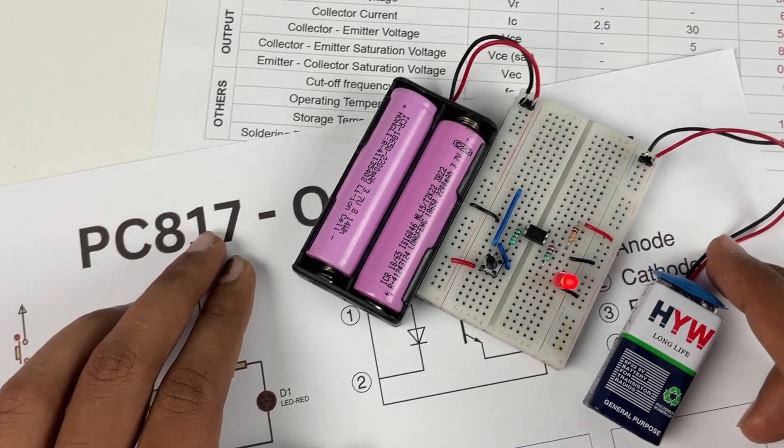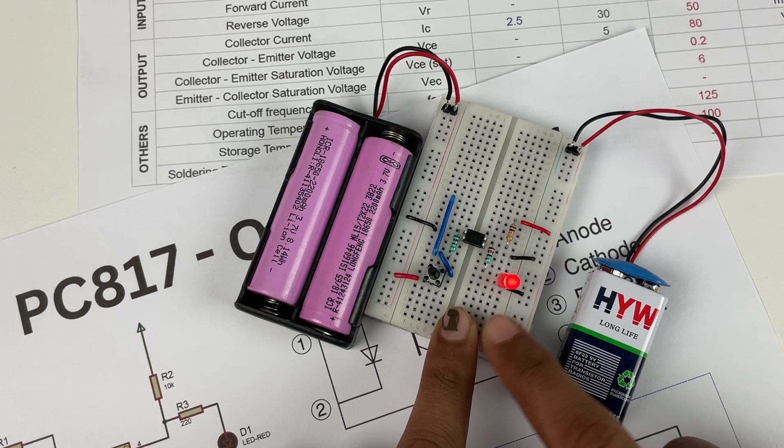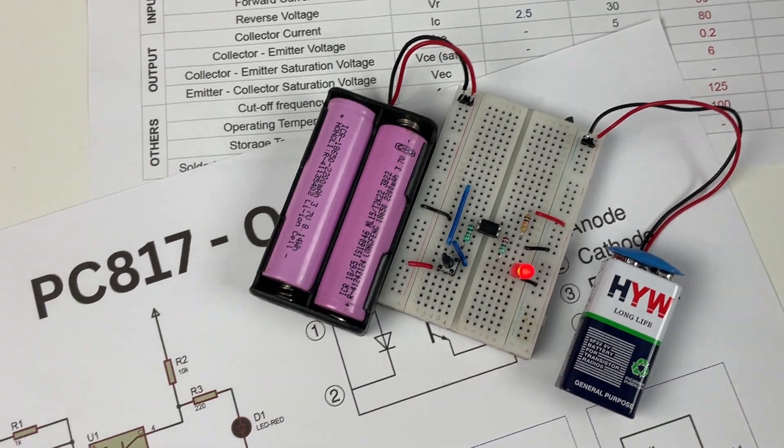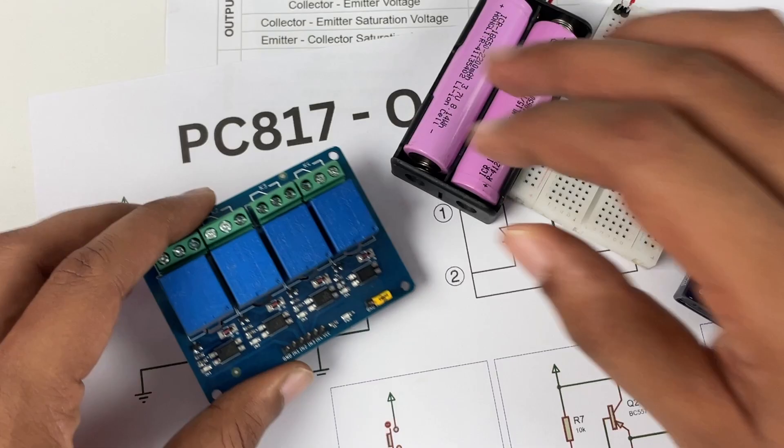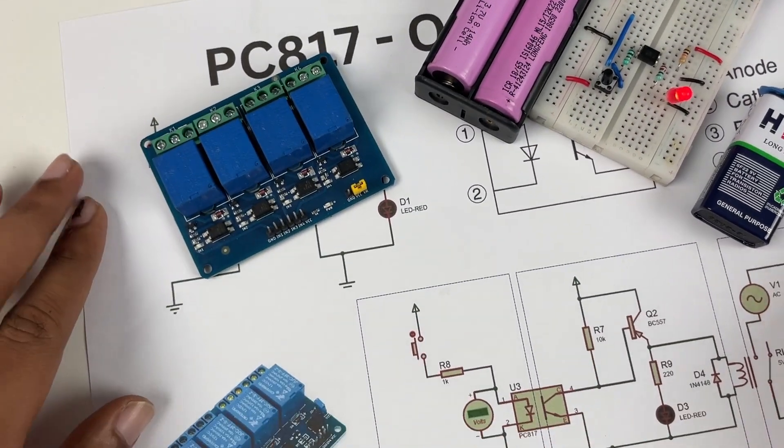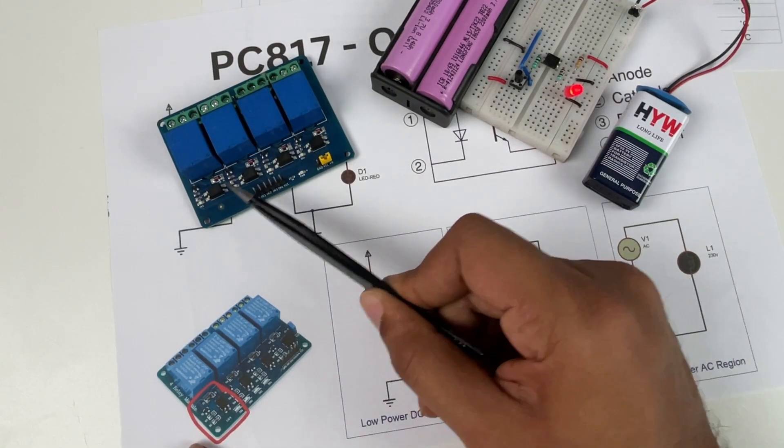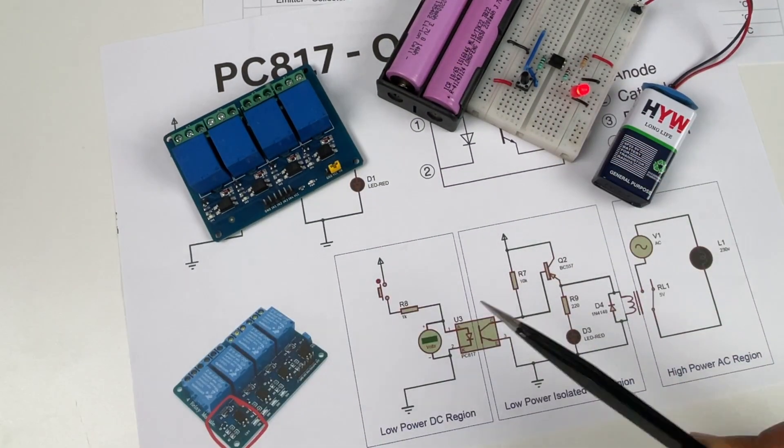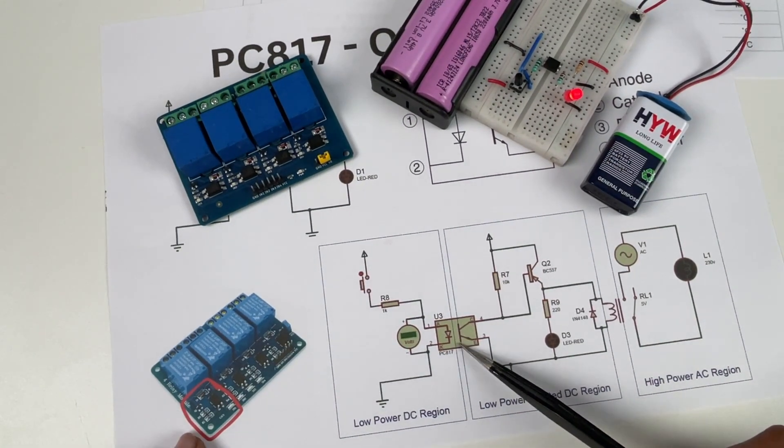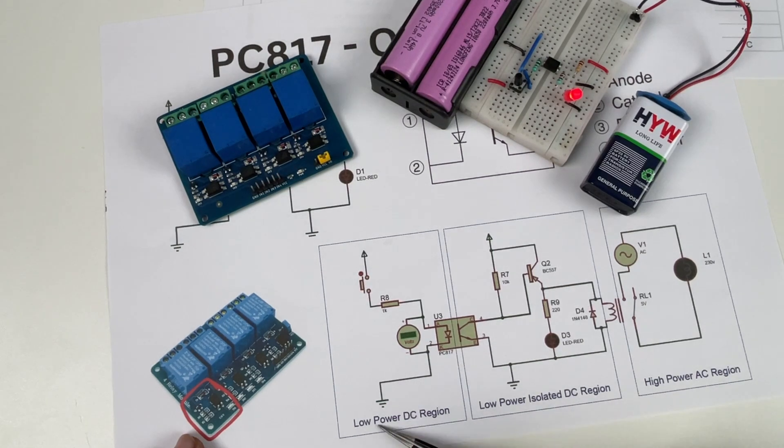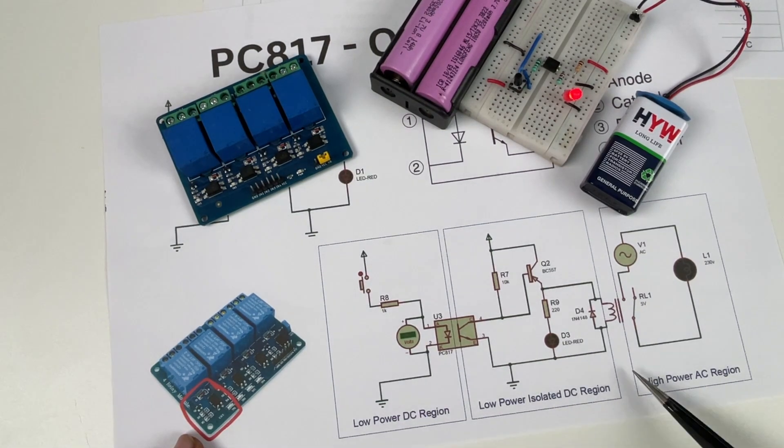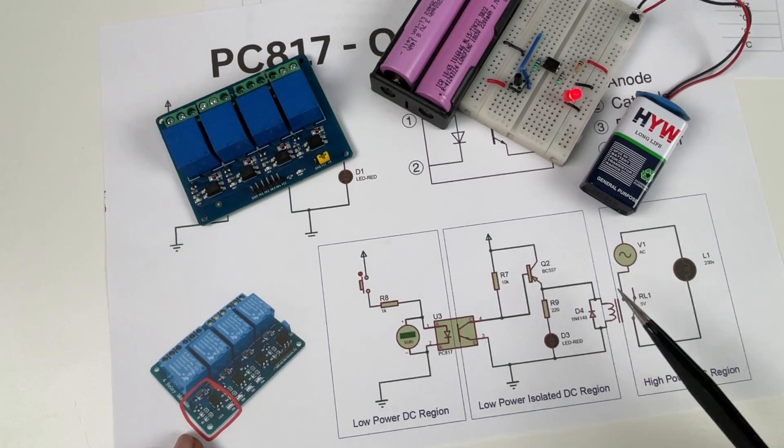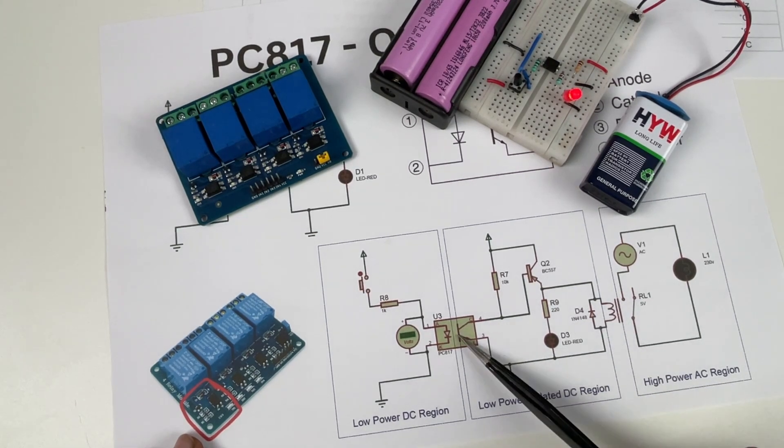So this is just a demo application on how an optocoupler works but normally optocouplers are not used like this. A very good practical application for optocouplers will be the relay modules. As you can see here this relay module has four relays and hence four optocouplers. So what they have done here is that they have an optocoupler which isolates the low power DC region with the high power AC region. So the relay is the actual switching element here but to trigger the relay we have used an optocoupler.